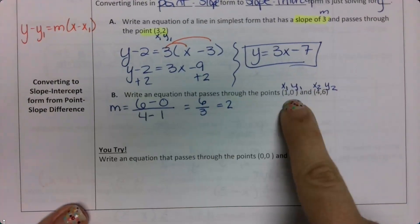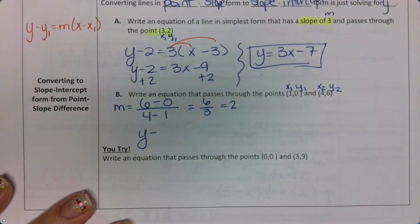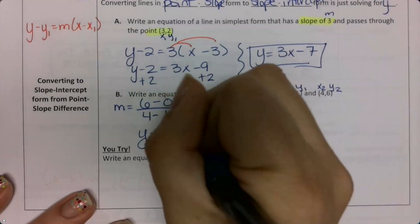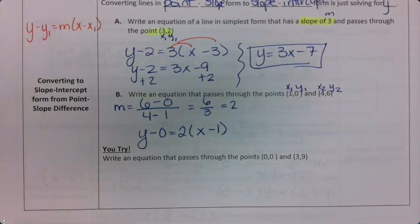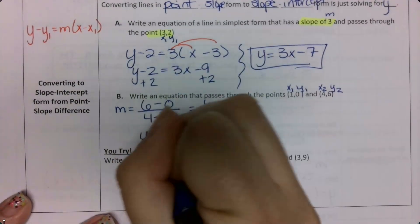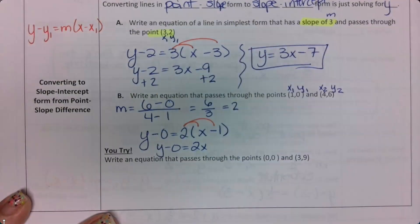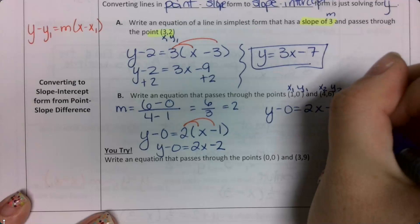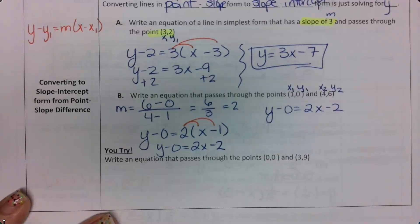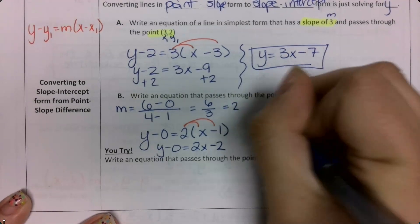I have my m and my x1, y1, so I'm going to plug into my formula. y minus y sub 1 — which is 0 — equals m, which is 2, times x minus x sub 1. Distributing the 2: y minus 0 equals 2x minus 2. Since subtracting 0 doesn't change anything, my final answer is y equals 2x minus 2.